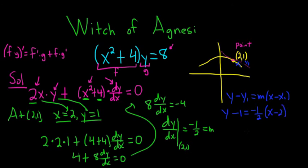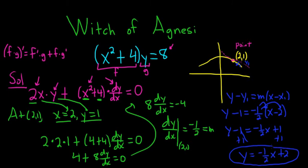Good stuff. So we have y minus 1. Now we'll distribute the negative 1 half. So that's negative 1 half x. And you distribute it here it's going to become a plus 1. Adding 1 to both sides we end up with y equals negative 1 half x plus 2. Right, 1 plus 1 is equal to 2. And that is the equation of the tangent line to the curve which is called the witch of Agnesi at the point 2 comma 1. I hope that made sense.